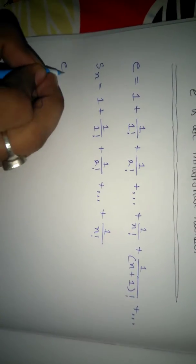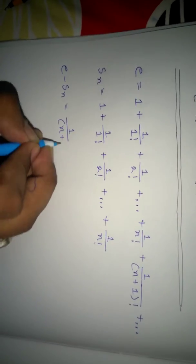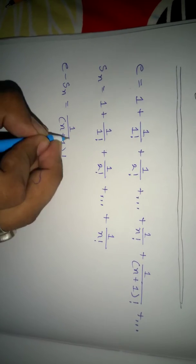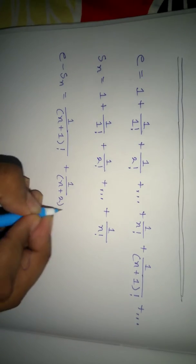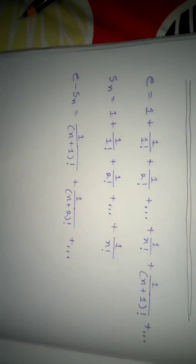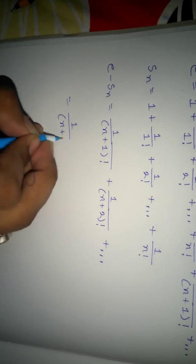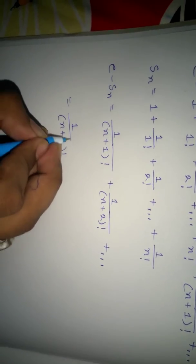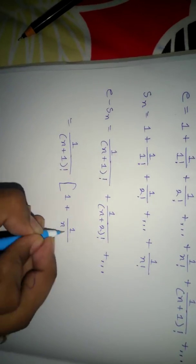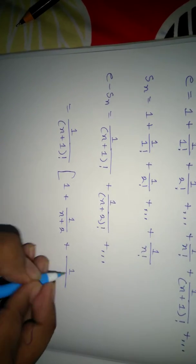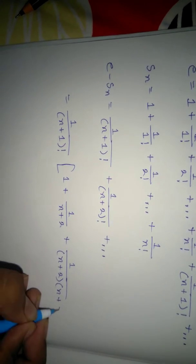Then clearly e minus Sn equals 1/(n+1)! + 1/(n+2)! + ... and so on. And this equals 1/(n+1)! times the quantity 1 + 1/(n+2) + 1/((n+2)(n+3)) + ... up to (n+1) terms.